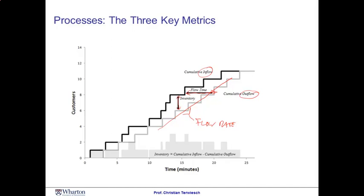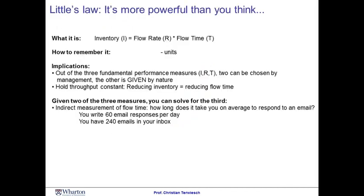This is not a formal proof of Little's Law, but the intuition behind it. We see that on average in a process, the inventory — expressed in our case as customers — is the flow rate, expressed in customers per minute, times the flow time, which is simply hours. The hours cancel out, and you have customers as the unit on both sides. Again, this is not a formal proof, but the basic intuition behind Little's Law.